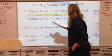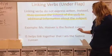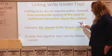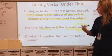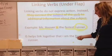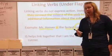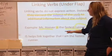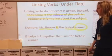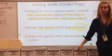They connect the subject of the verb to the additional information about the subject. For example: Ms. Hoover is the fastest runner. That word is is connecting our subject — which is me — to the description fastest runner. So is helps link together that I'm the fastest runner. Without that is, it'd be really hard to understand what I'm trying to get across. Linking verbs do not express action, but they connect the subject to additional information about the subject. Make sure you get down that definition along with your example, then pause the video and get that down.